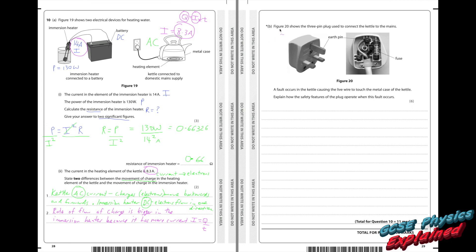And finally, here's the last question and it's another six marker. Question b. Figure 20 shows the three pin plug used to connect the kettle to the mains. A fault occurs in the kettle causing the live wire to touch the metal case of the kettle. Explain how the safety features of the plug operate when this fault occurs.